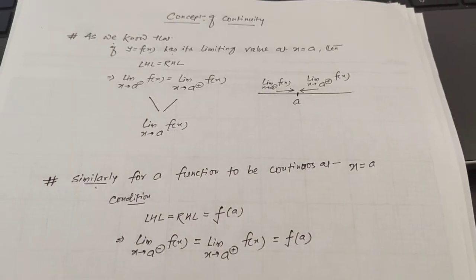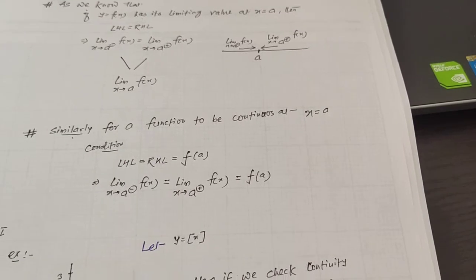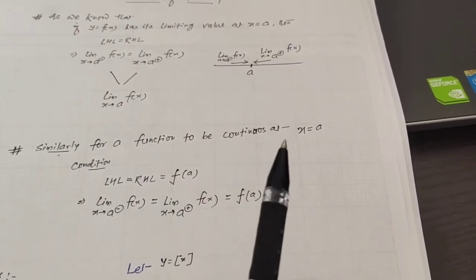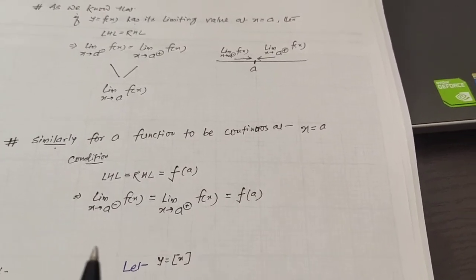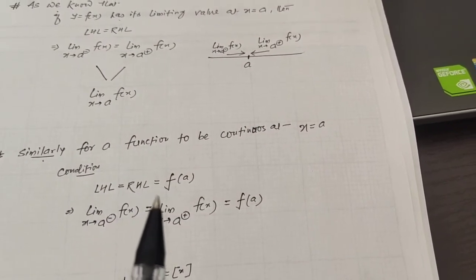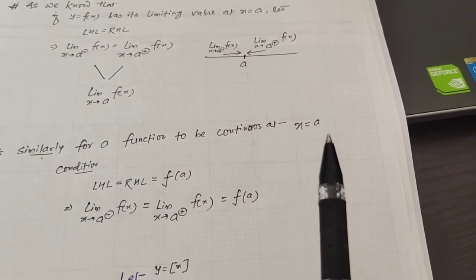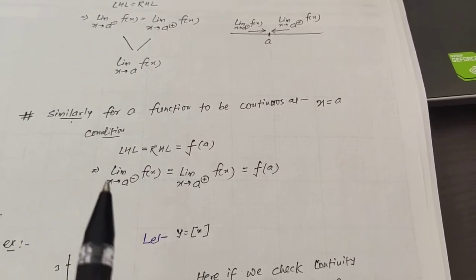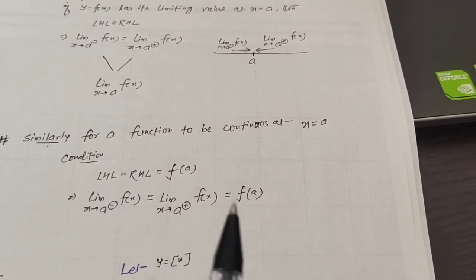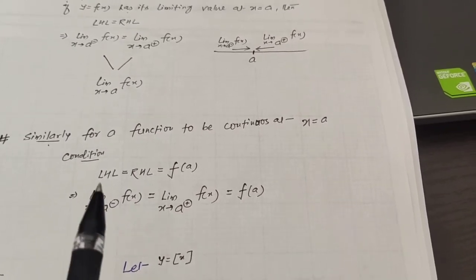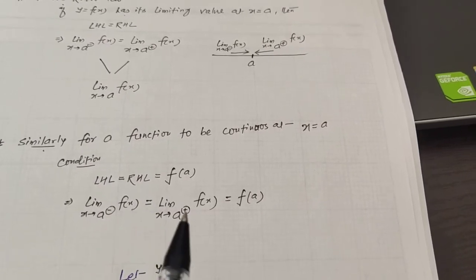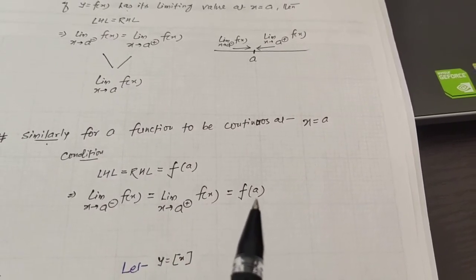In a similar way, we can also understand the concept of continuity of a function. If a function is continuous at x equals to a, we can say that the left-hand limit, right-hand limit, and the value of the function at x equals to a must all be the same. That means: limit x tends to a minus of f(x) equals limit x tends to a plus of f(x) equals f(a).